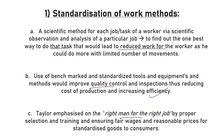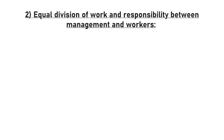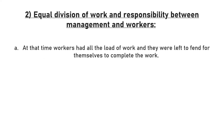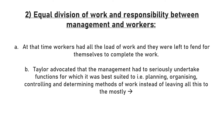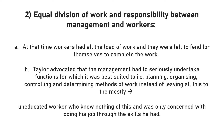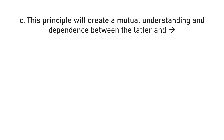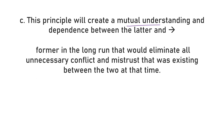Number two is equal division of work and responsibility between management and workers. At that time, workers were left to work as per their will, but Taylor emphasized the importance of planning, organizing, controlling, and determining work methods rather than leaving it all to workers. An uneducated worker is only concerned with completing a task and getting wages, not with overall efficiency. Dividing work between management and workers creates mutual understanding and interdependency, eliminating unnecessary conflicts and mistrust.